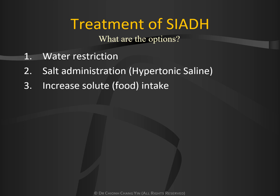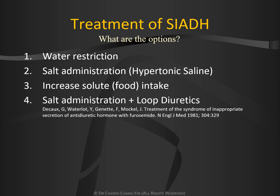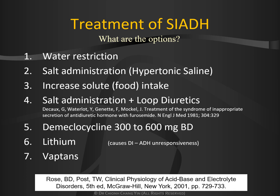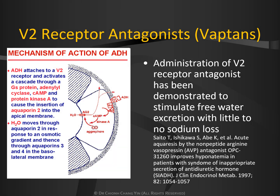Some older studies have advocated giving salt administration together with loop diuretics; however, the results may be very erratic as the proportion of salt-to-water loss varies across different patients. Demeclocycline can be used, as it induces a state of nephrogenic diabetes insipidus. Lithium also causes the kidneys to become ADH-unresponsive. Finally, we have the vaptans — a V2 receptor antagonist — which has been demonstrated to stimulate free water excretion with little or no sodium loss.